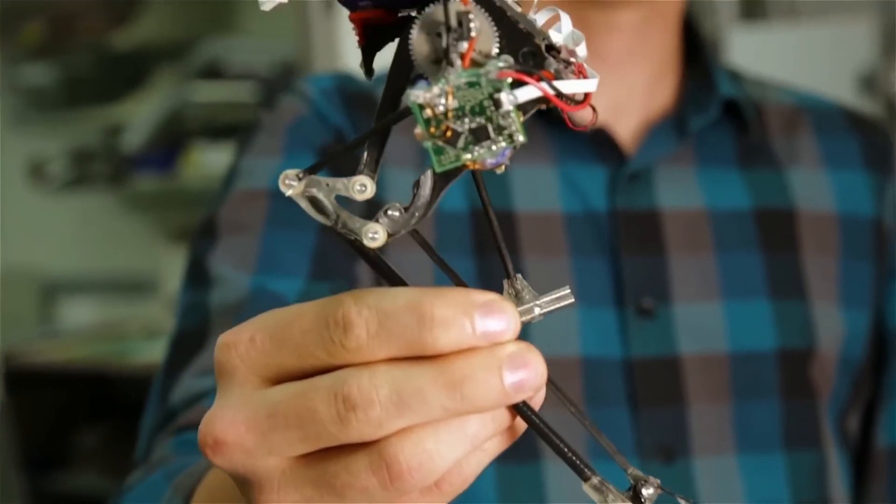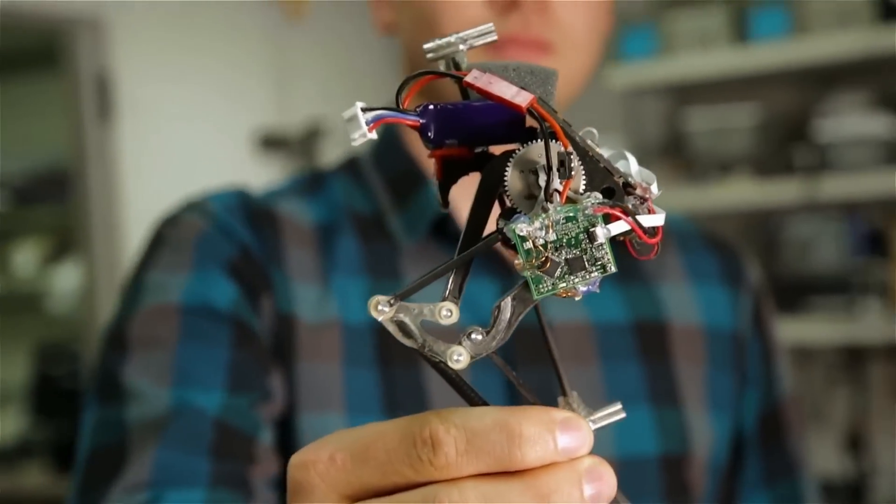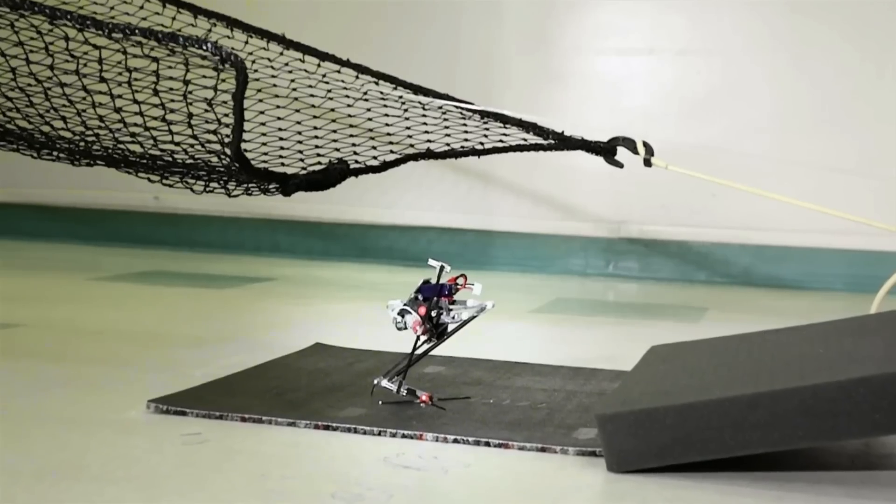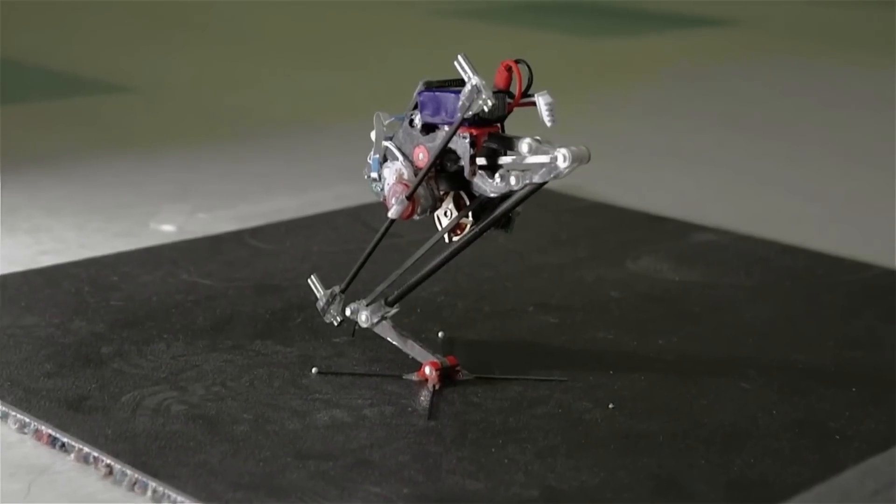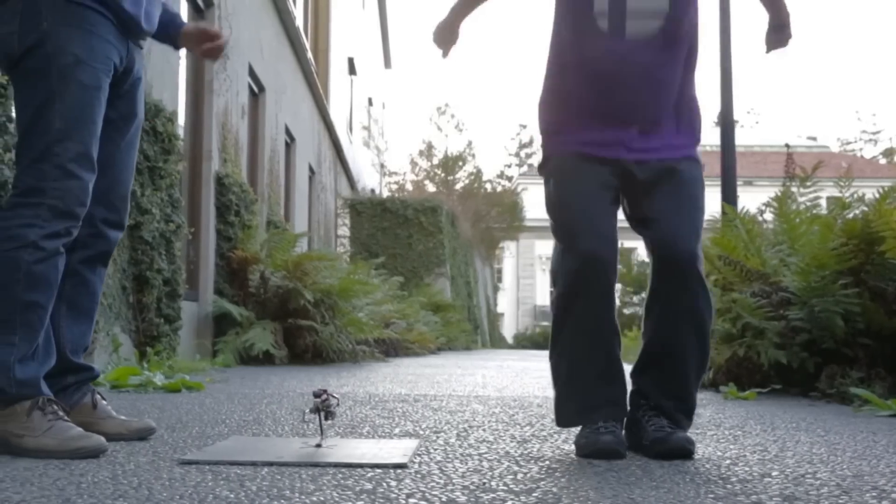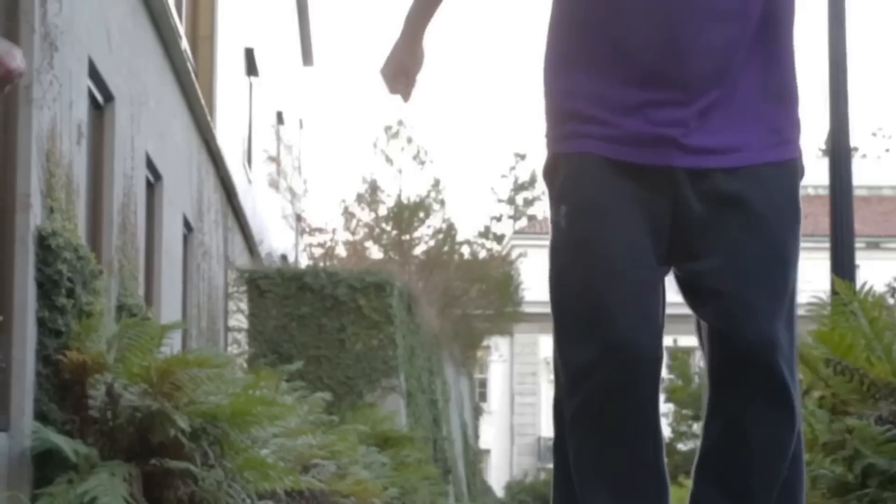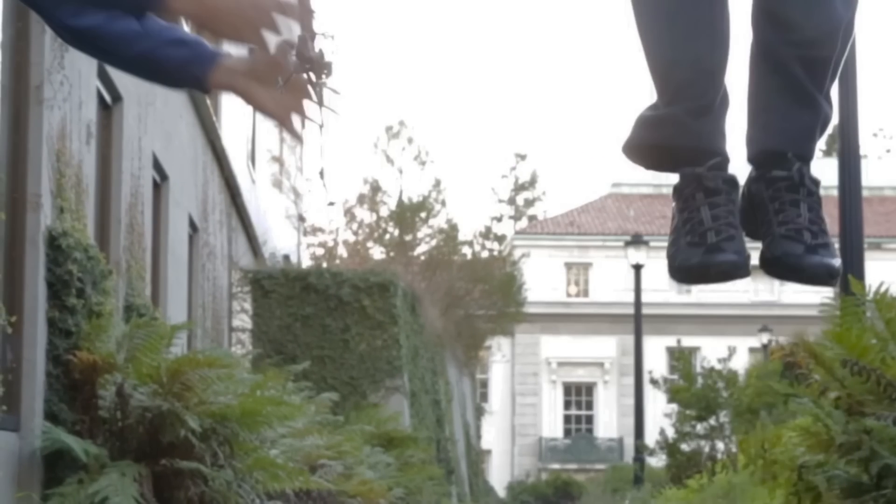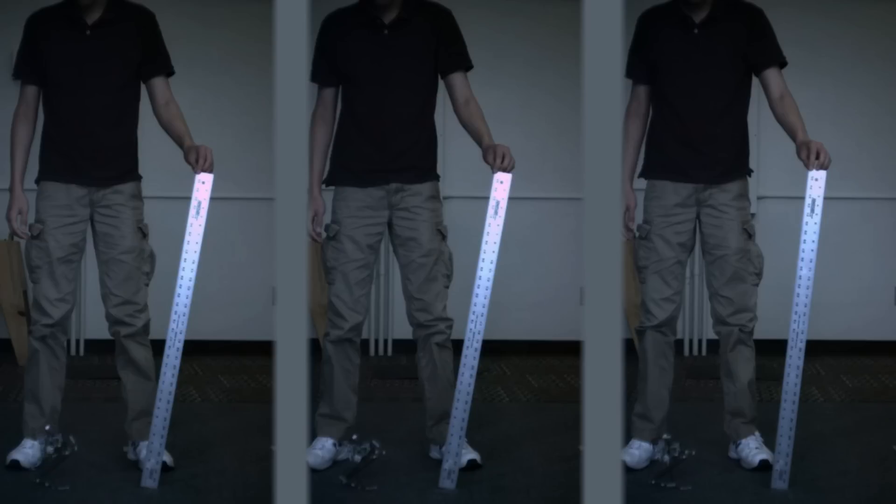The special thing about this robot is that it can jump higher and faster than any other robot that's out there right now. It has 56% more vertical jumping agility. SALTO can jump better than a human. It can jump higher. It can jump to one meter starting from a full standstill.